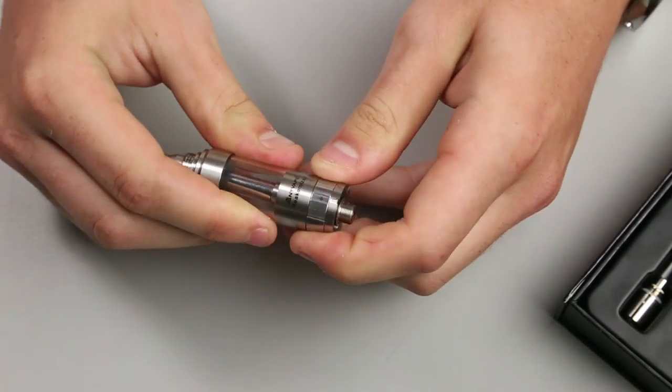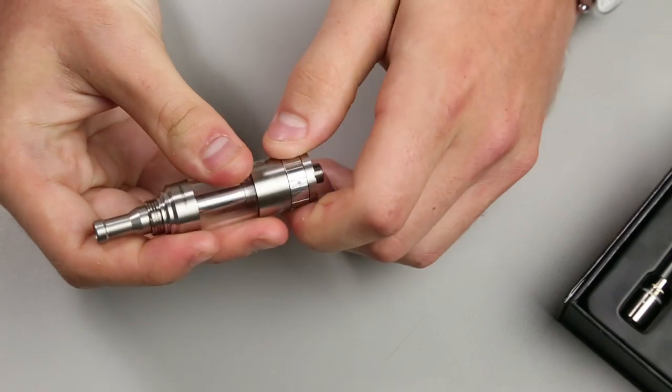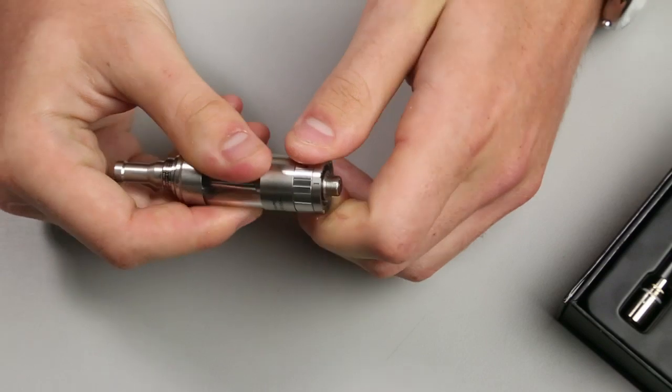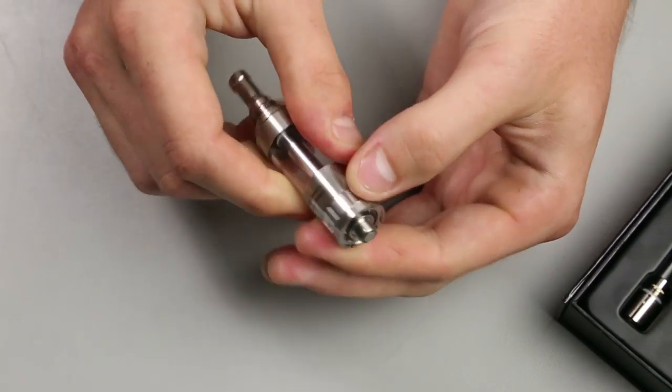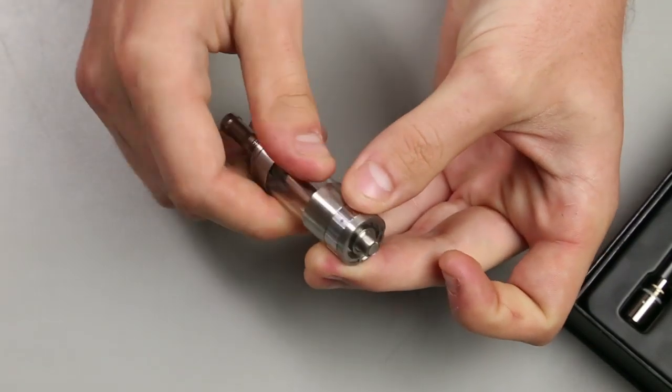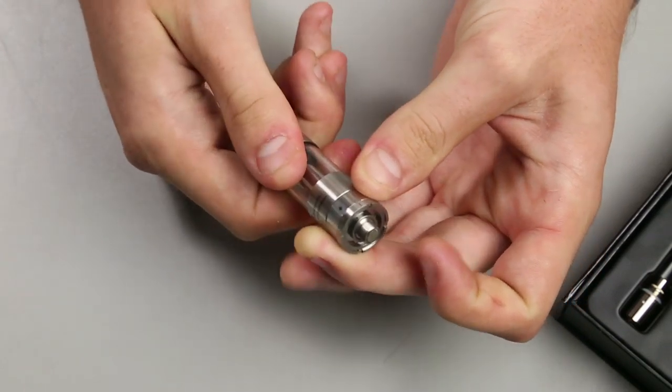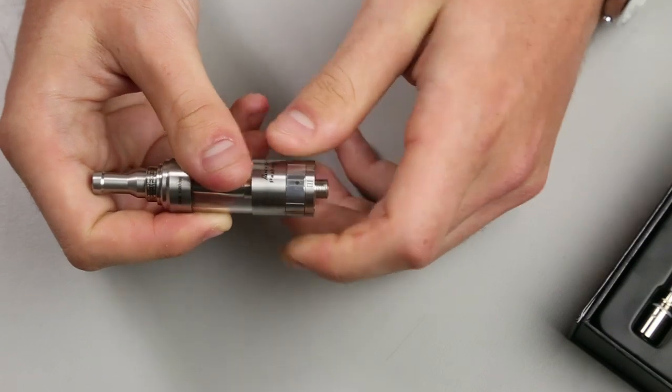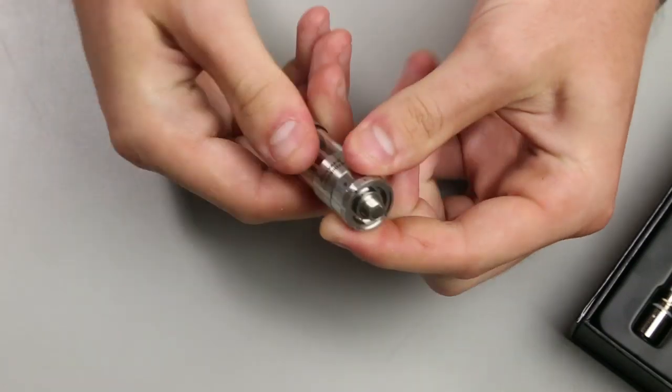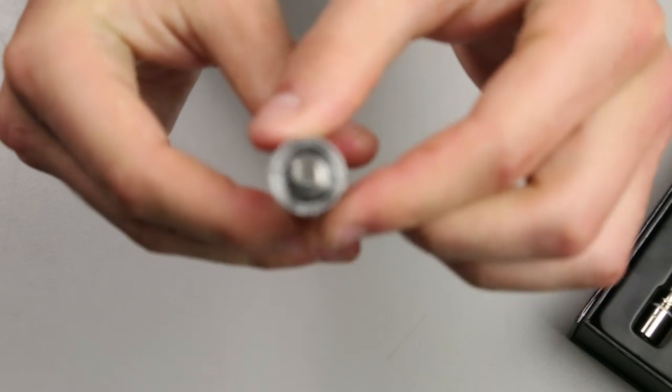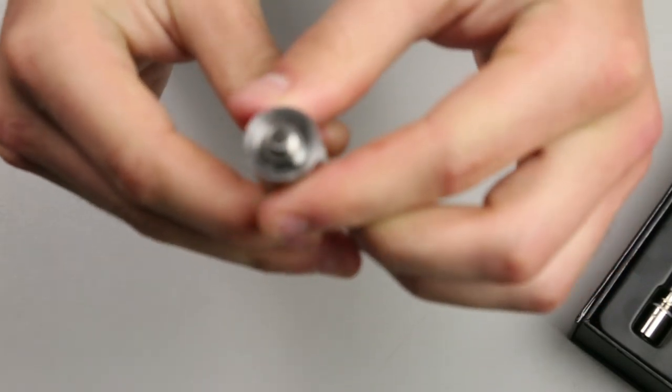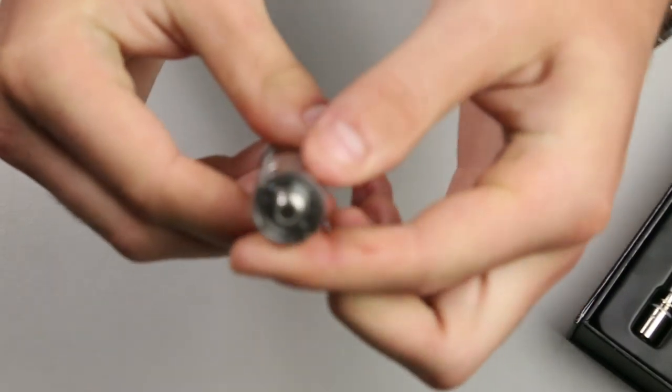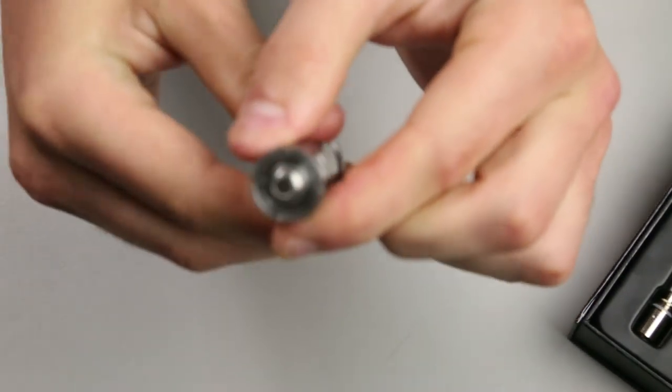And then we've got the airflow control. There's three different settings going from the tightest draw to the airiest draw. And the thing I really like about this is how tight that ring is. It's really clicky. It's nice. It feels nice to use. A lot of these adjustable airflow tanks, at least in the beginning, had loose ones that you could accidentally knock out of place with your hand or while you were using it. And if you look in there, you can see how this airflow control works. There's two holes opposing each other for each setting, basically. And you can go from the lowest to the highest.